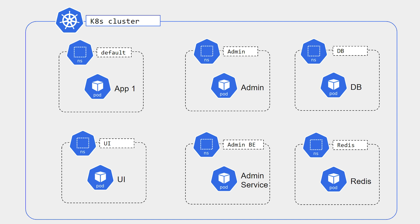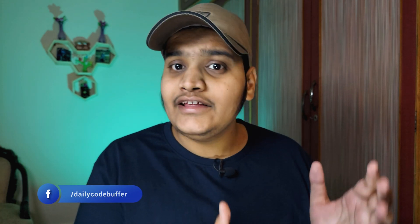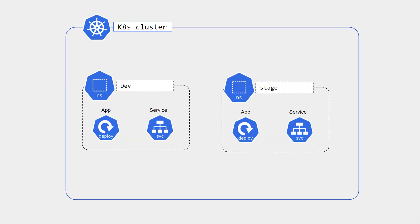We can use one namespace for all UI components, one for all backend services, a different namespace for worker services, and a different namespace for the database. This way everything is bifurcated and associated within that particular range. We can also use namespaces for maintaining resource limits — defining which resources can be accessed by a particular namespace only, so there is no blockage of resources for other namespaces.